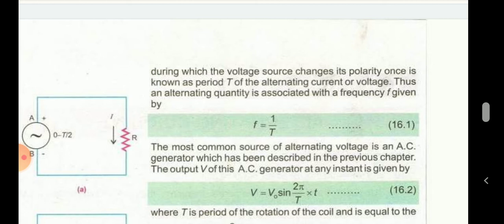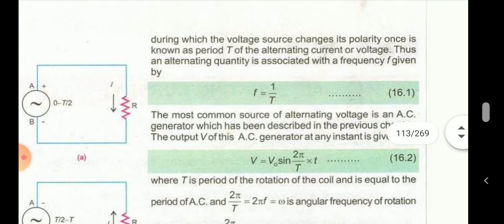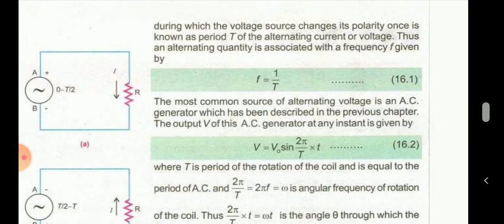The time period is associated with the frequency, which is given by f = 1/T — frequency is the reciprocal of the time period. The most common source of alternating voltage or alternating current is an AC generator, which has been described in the previous chapter.